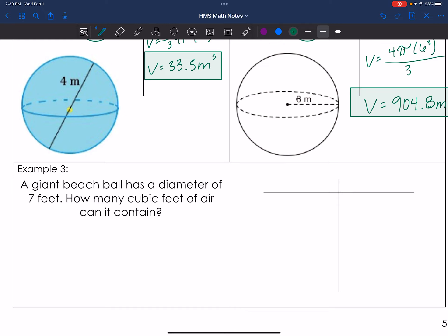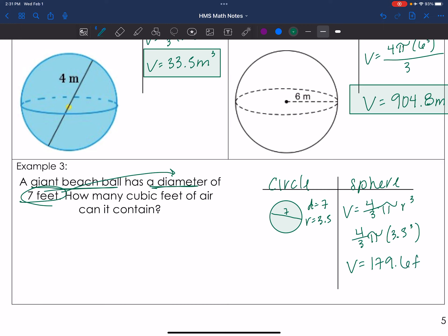All right. Example three, a word problem. So a giant beach ball, which I know to be a sphere. It's a circle sphere. This seven is diameter. So this seven goes all the way across, which means radius has to be half that. And half of seven is 3.5. And I'm trying to figure out the volume. Four thirds pi r cubed. So now I've got four thirds pi times 3.5 cubed. Volume should equal, and you should already have the answer because you like to work ahead because you actually know what you're doing now, 179.6 feet cubed.